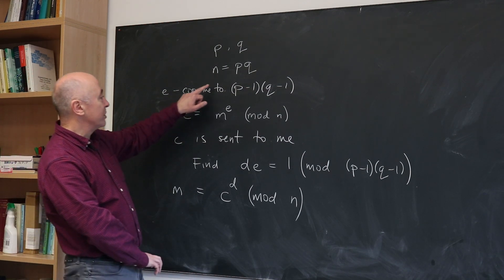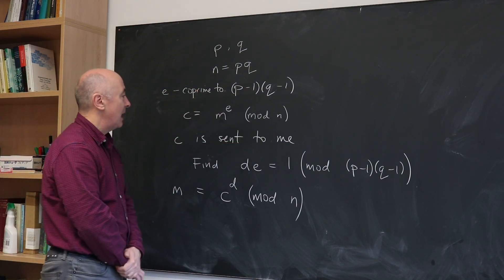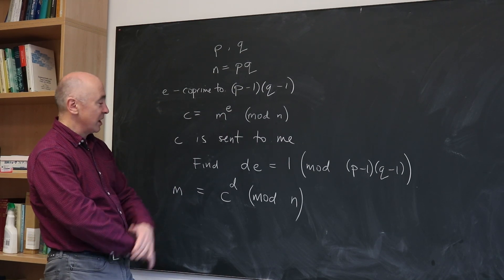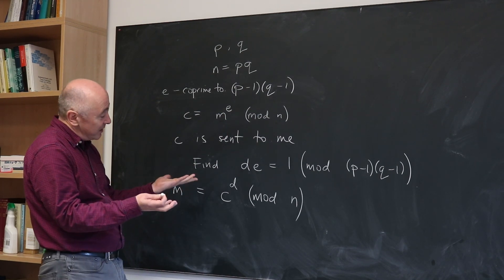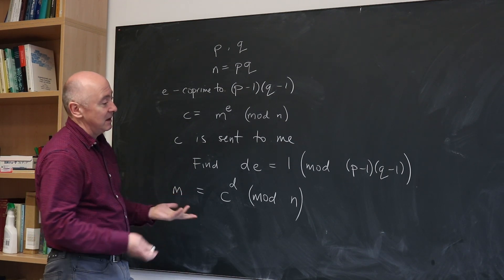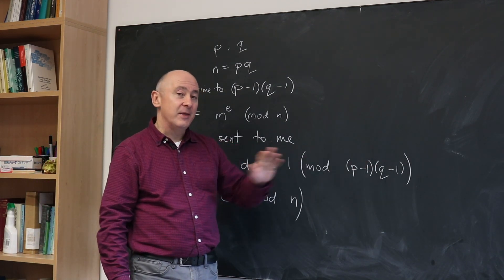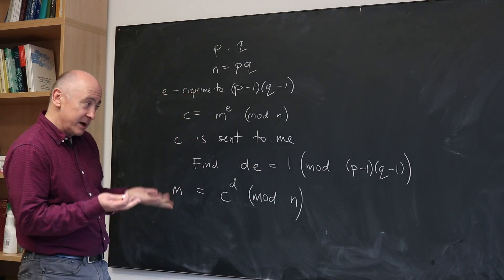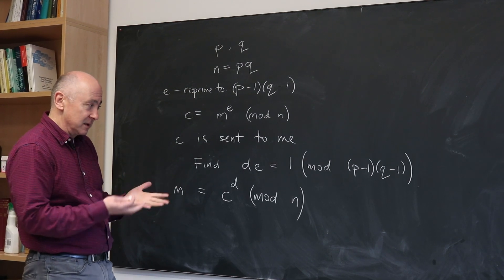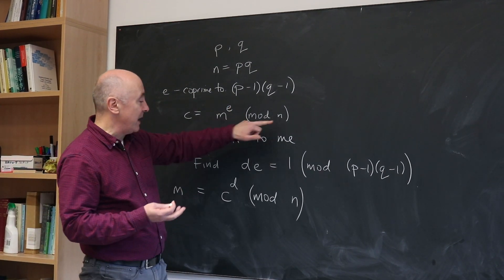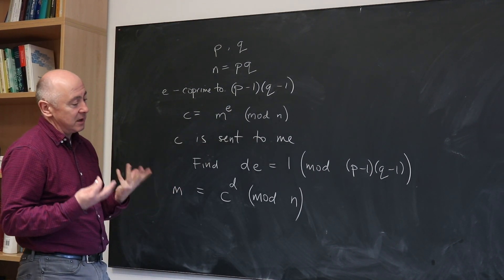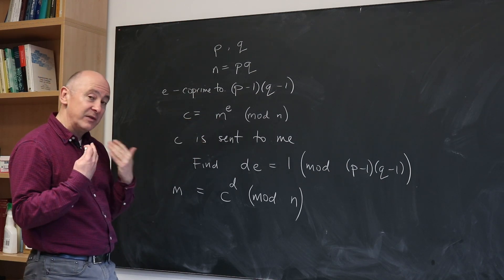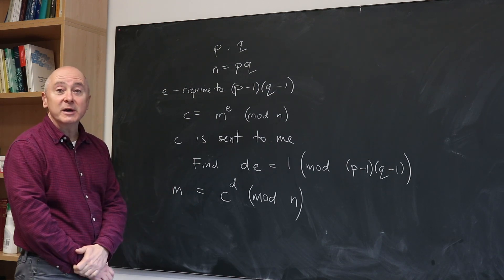For them to send me C only required a knowledge of N and E, which I've advertised, so they can easily do that. For me to decode this, I need to know P and Q, and that's very hard for other people to know. It's very hard for other people to discover P and Q from N. So I have a way of securely decrypting the message given the information I have, but it's very hard for other people to do that.